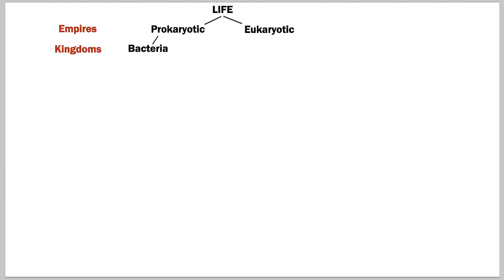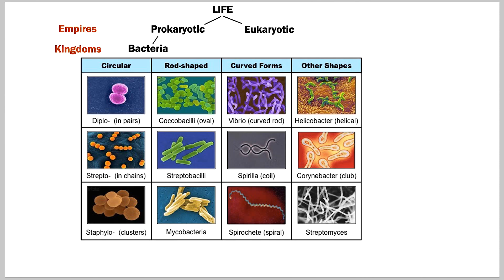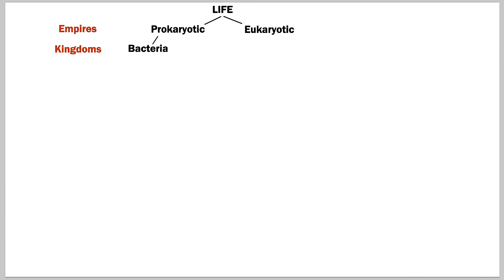The next category — branching out like a tree of life, or really an upside-down tree — is the kingdoms. The prokaryotic empire has the bacteria kingdom, and that's it for prokaryotic. Bacteria come in all sorts of shapes and remain quite fascinating — surely some inspiration there for monstrous conception.